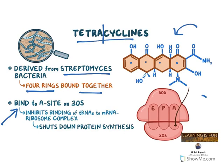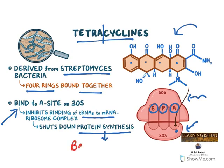Bacterial ribosomes are made up of 50S and 30S subunits, and within these there are three different sites: the aminoacyl site (A site), the peptidyl site (P site), and the exit site. Tetracyclines go and bind at the 30S ribosome A site. Once they bind there, they inhibit the binding of tRNA to the mRNA-ribosome complex, thereby inhibiting protein synthesis. This produces a bacteriostatic action — they cannot kill the bacteria but stop their growth.